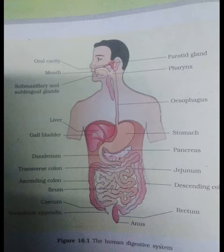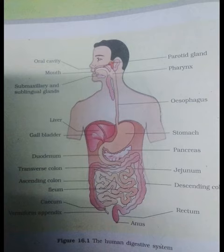The food enters into the duodenum portion of the small intestine and is acted on by pancreatic juice, bile, and finally by the enzymes in succus entericus, so that the digestion of carbohydrates, proteins, and fats is completed. The food then enters into the jejunum and ileum portion of the small intestine.